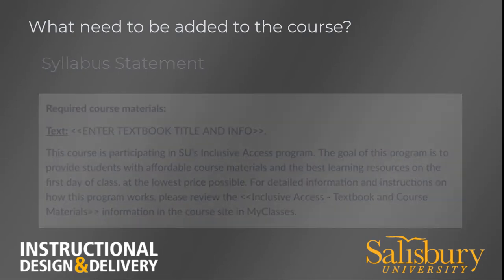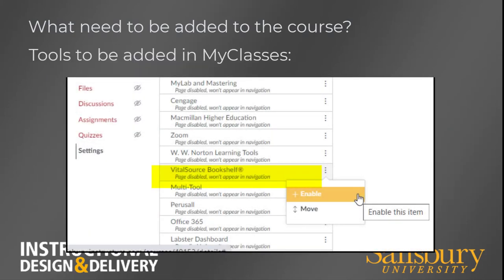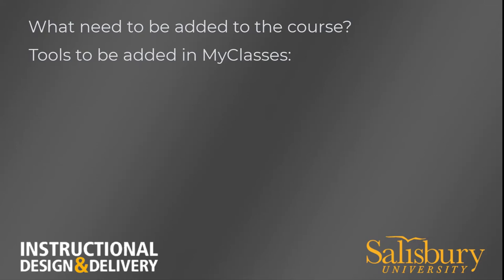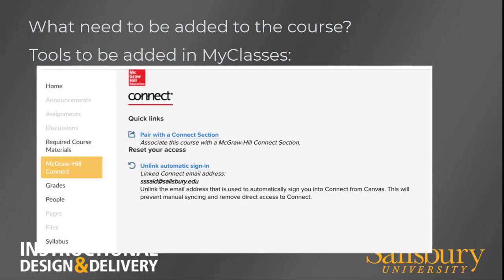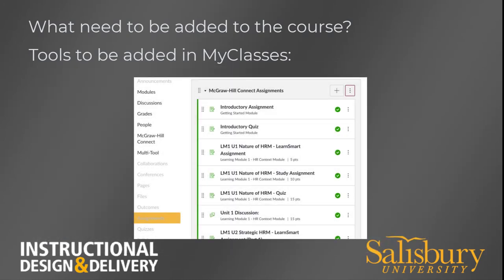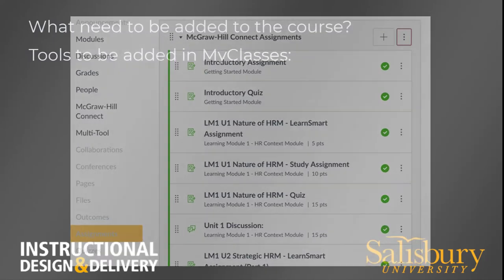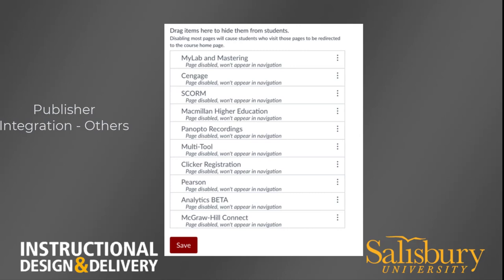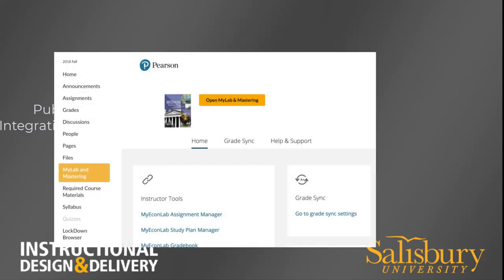All participating courses must enable the VitalSource tool titled VitalSource Bookshelf on the course navigation menu. Instructors utilizing McGraw-Hill Connect publisher content will need to enable the McGraw-Hill Connect integration tool, pair the my classes course with a course in Connect, and deploy the assigned Connect activities to the course in my classes. Courses utilizing other publisher content will also need to enable the specific publisher integration tool — such as MyLab and Mastering, Cengage, Macmillan, etc. — and link the my classes course with the publisher course.